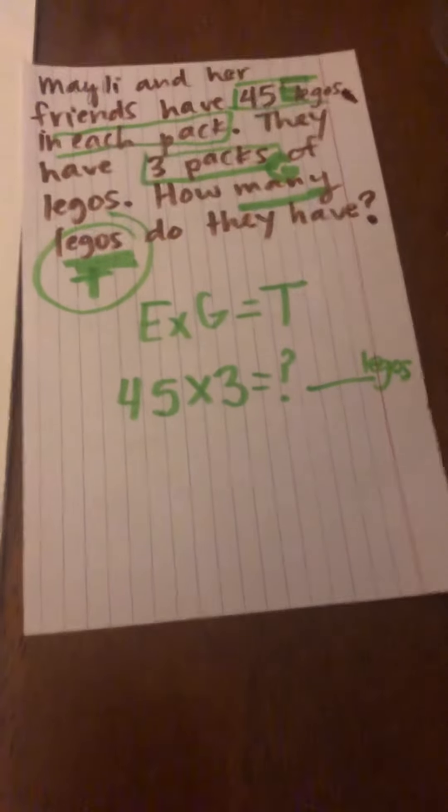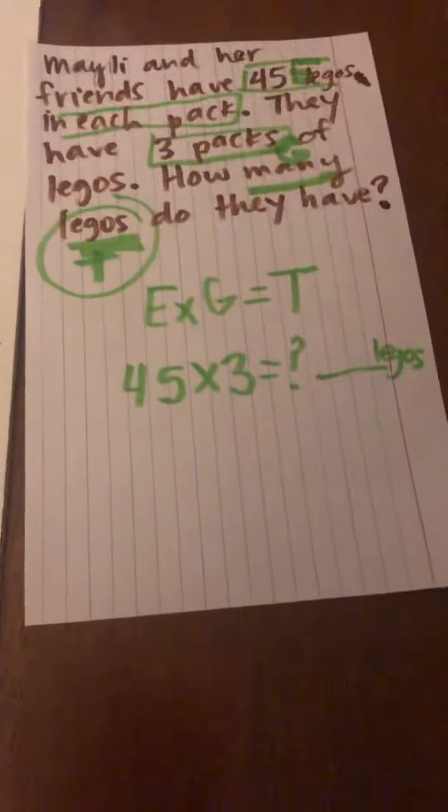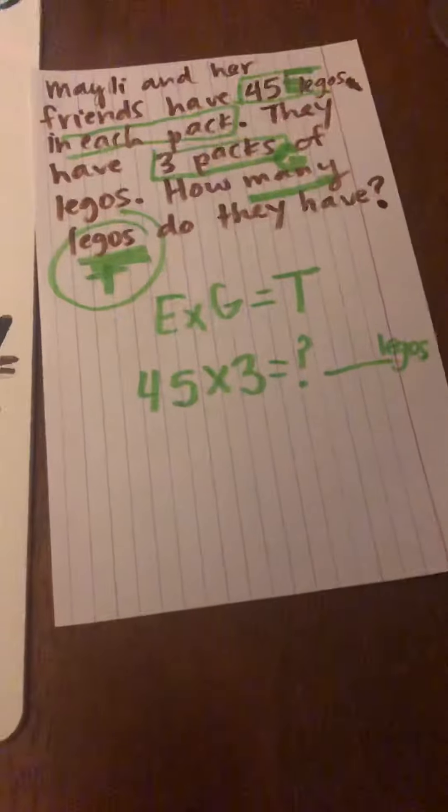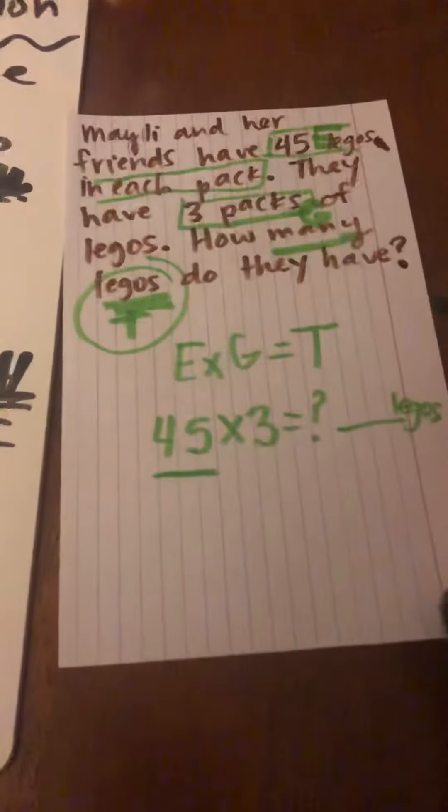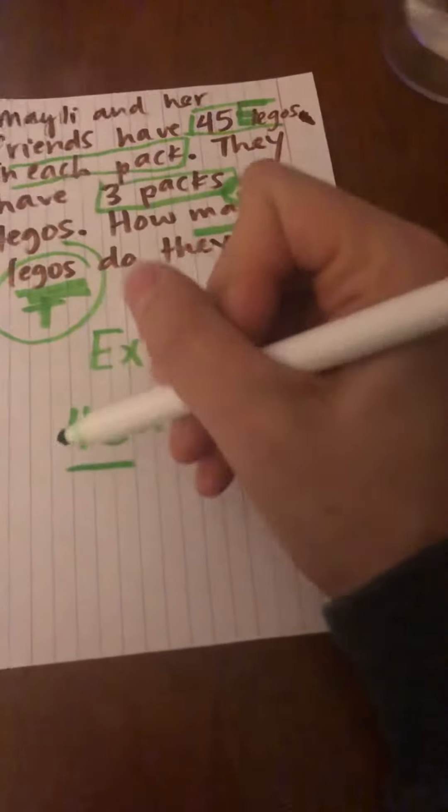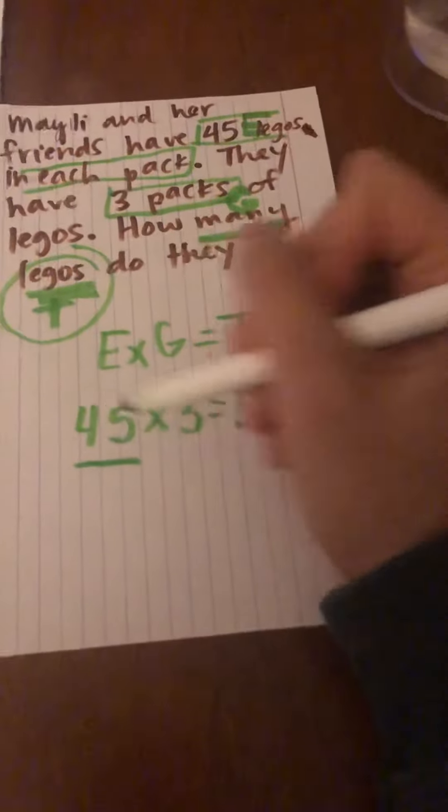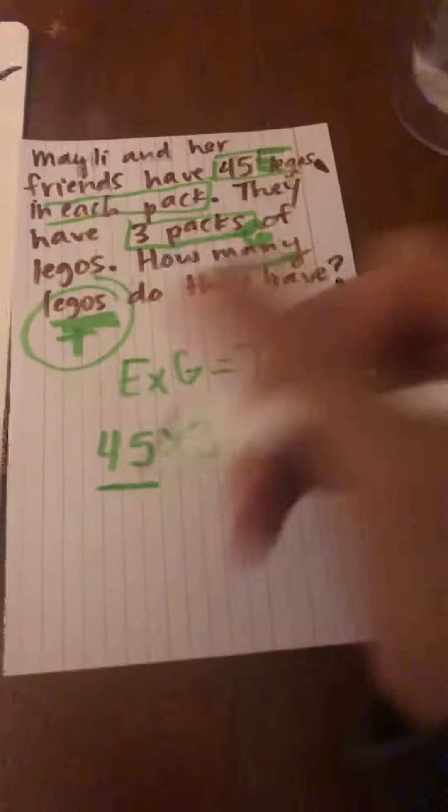All right, and my phone died, but we're gonna finish up here with the solving of this problem. We know we need to multiply, but what do we do when we have a giant number? We can add 45 three times, or we can count by three 45 times. I'm gonna go with three 45s.